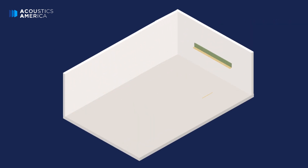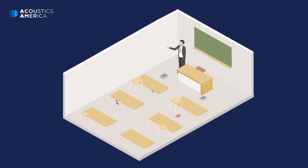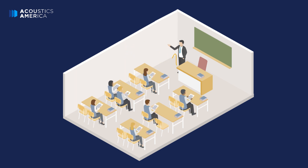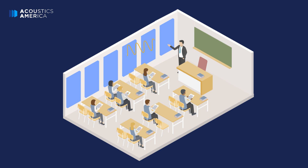In spaces with hard surfaces, any sound within the room will bounce around, creating echo and reverberation. The term sound absorption refers to improving the sound quality in a space or reducing this echo and reverberation.